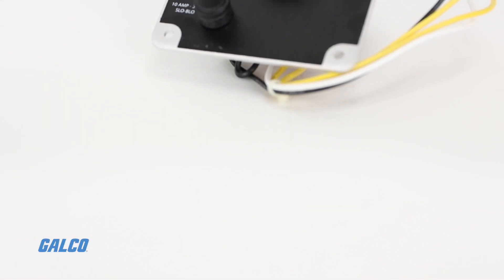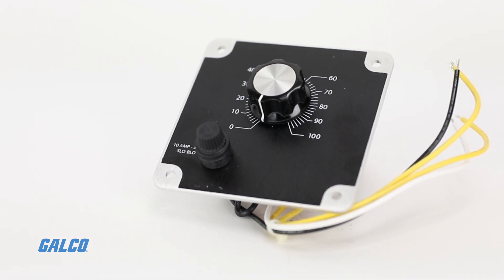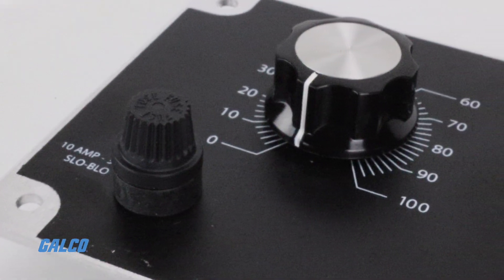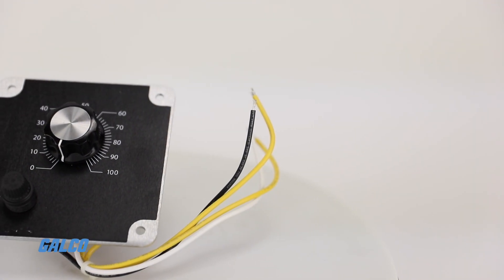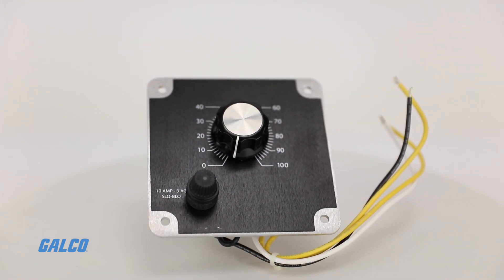The TA101P by Minarik is an SCR chassis adjustable speed drive designed for PMDC brushed motors. This compact drive solution is ideal for light duty motor control applications.